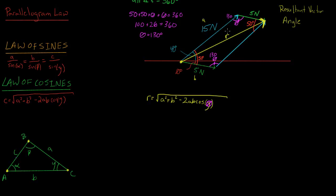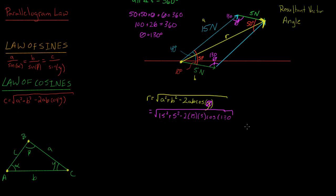Putting all our numbers in, we have the square root of 15 squared plus 5 squared minus 2 times 15 times 5 times the cosine of 130. When we solve this, we get the length of our resultant vector, which is 18.6 newtons. This makes sense because the resultant is our largest number, and 18.6 is bigger than both 15 newtons and 5 newtons.